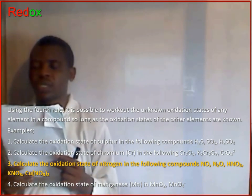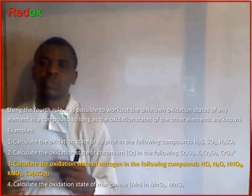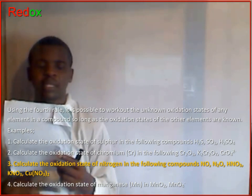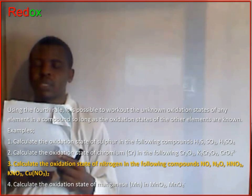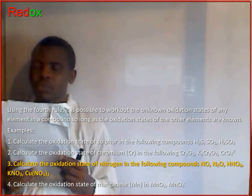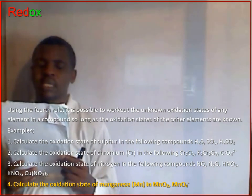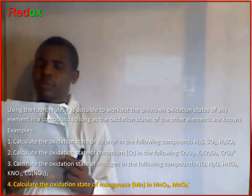Calculate the oxidation state of nitrogen in the following compounds: nitrogen monoxide, nitric acid, potassium nitrate, and copper nitrate. Also calculate the oxidation state of manganese in manganese oxide and in manganese ion.